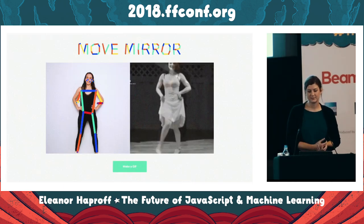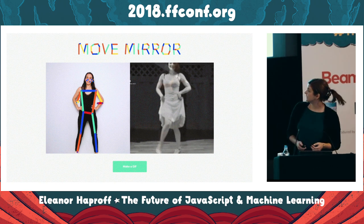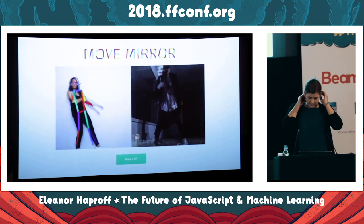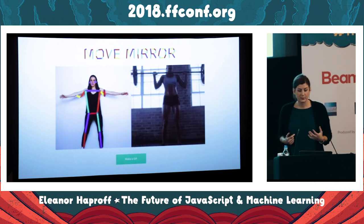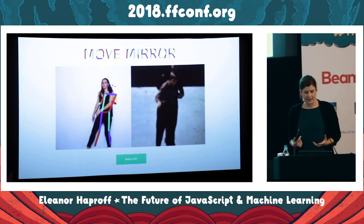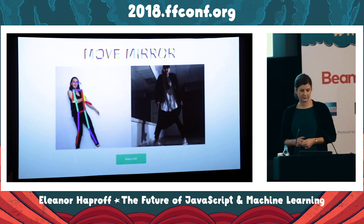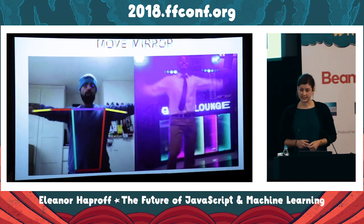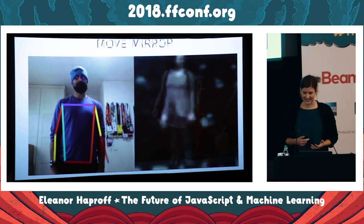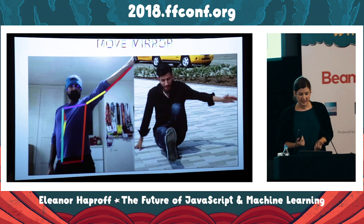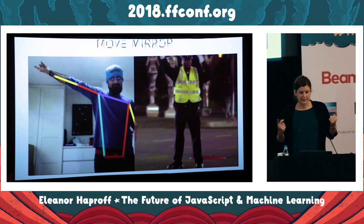Another fun demo I want to show you is Move Mirror, made by the smart people at the Google Creative Lab, which lets you explore pictures in a fun way. You turn on your webcam and move around, and the camera pulls up pictures of poses that match yours in real time from a database of more than 80,000 images. This uses a pre-trained model called PoseNet, which detects positions of 17 points in the body, such as eyes, ears, wrists, and knees. It runs entirely within the browser and can be used with any webcam.